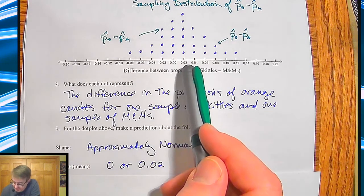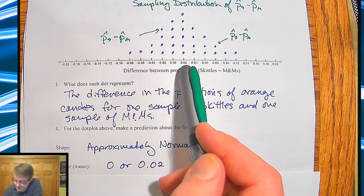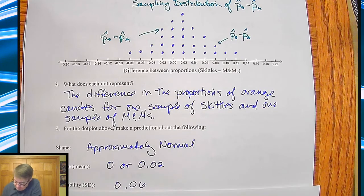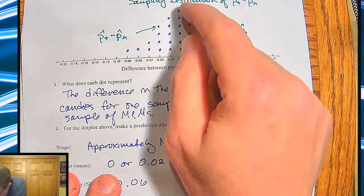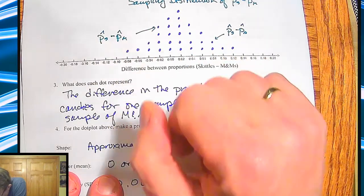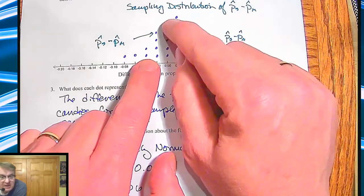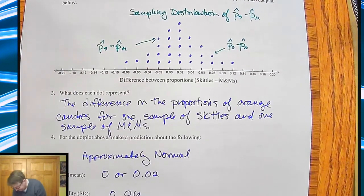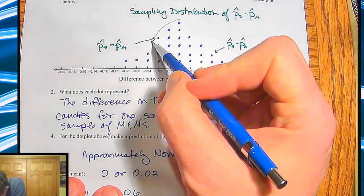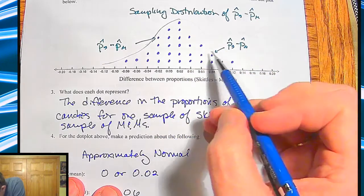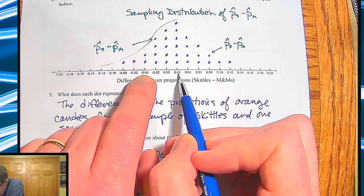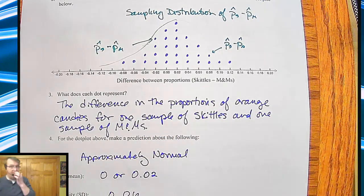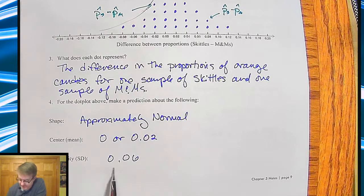For center, most people would say around 0 to 0.2 — somewhere in between. For variability, around 0.06. The way you determine this from a graph: remember that the first standard deviation happens at the inflection point — where the curve goes from concave down to concave up. From the graph, that looks like it happens around negative 0.04 to 0.02, so about 0.05 or 0.06.